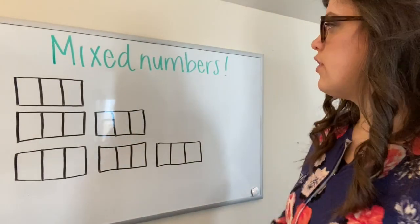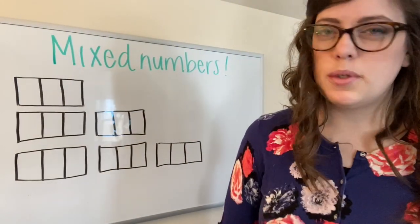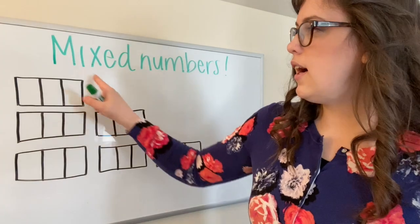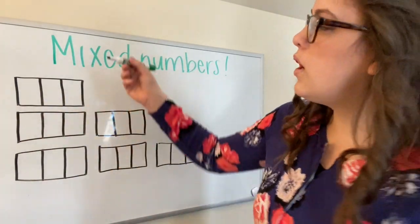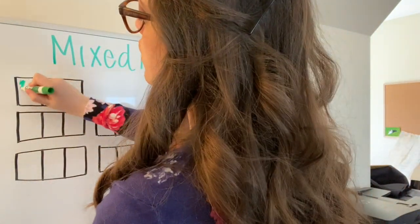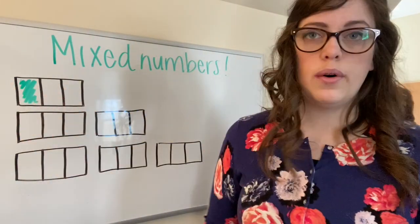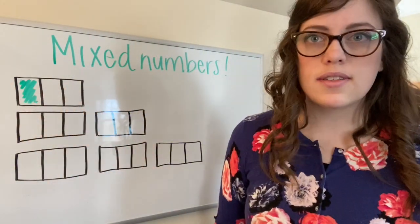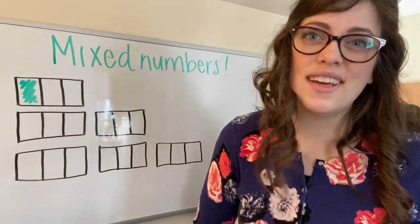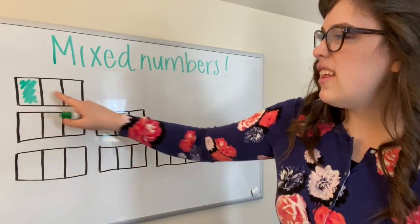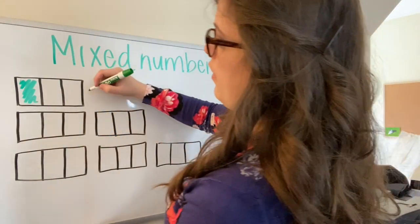So again, we're going to look at three separate examples. Now, the first one, I'm going to start with one third. So I'm just going to color in one piece of a whole, one out of three pieces. And we already know from Monday, Tuesday and Wednesday that this right here is equal to one third.